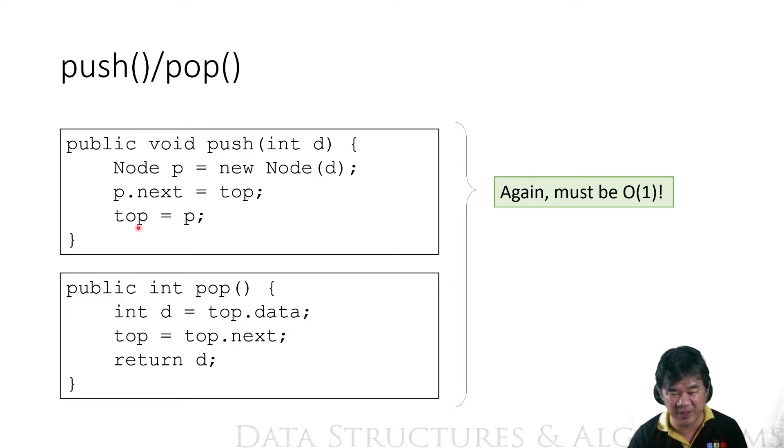Okay, when you want to pop, you have to record your data at the top first, and then you point top to the next. So the current top, the previous top, is going to disappear, and then you return this. If you don't record the data first, you cannot return this data because you don't have anything pointing to it.